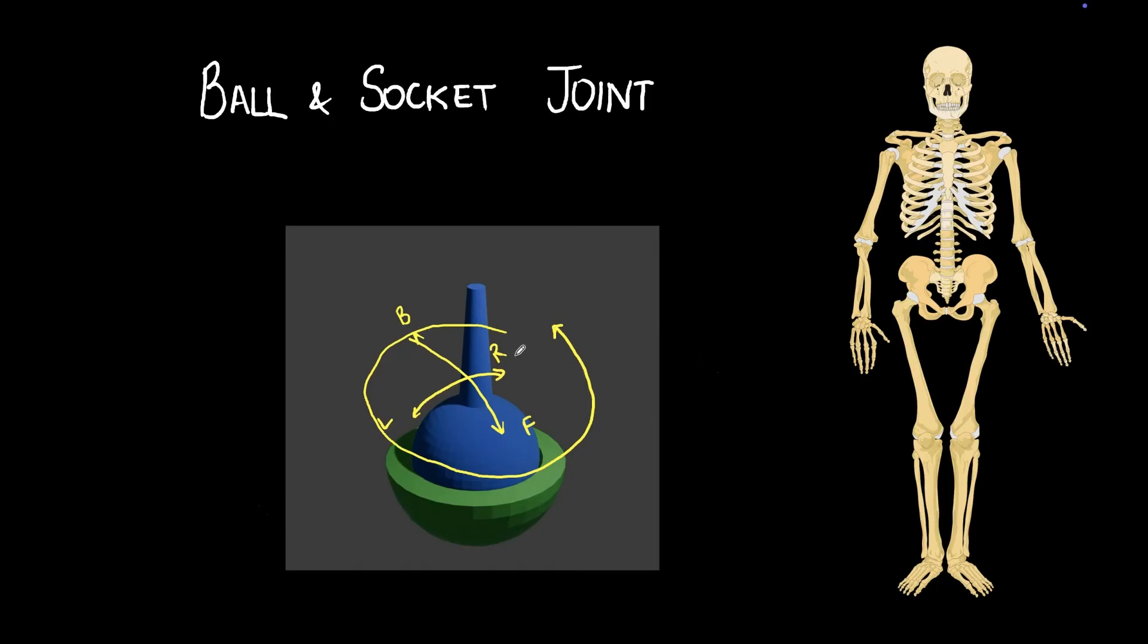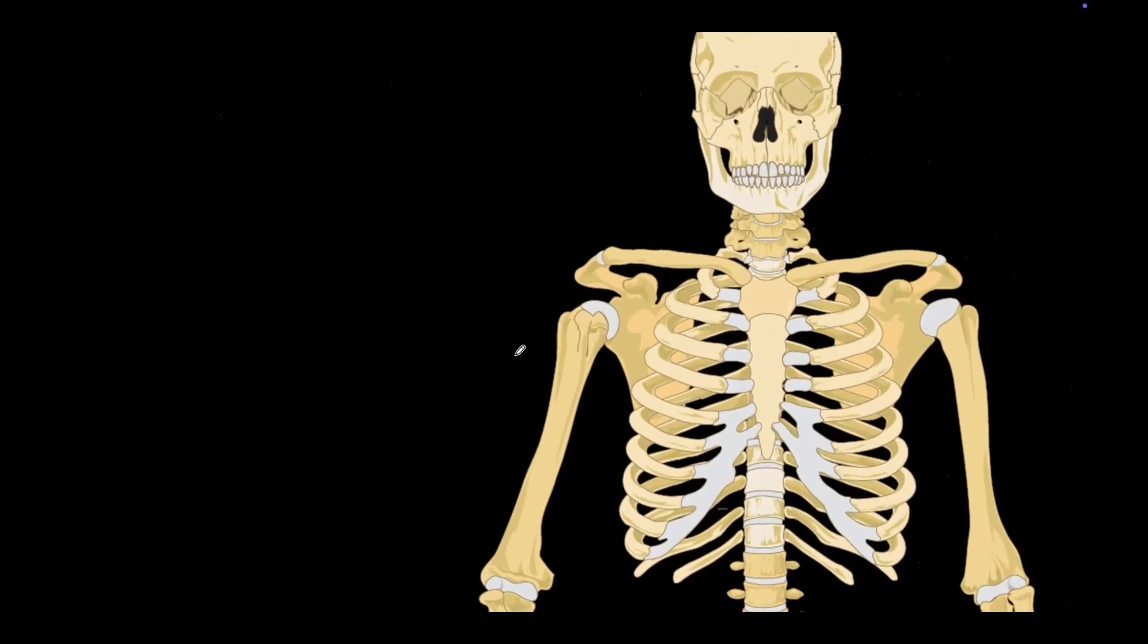Well, you may have gotten it right. The joint at the shoulder is a ball and socket joint. Can you spot the ball here? Right? Yes, that's the ball and the socket is there.